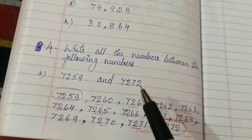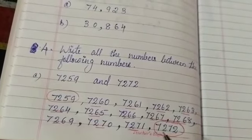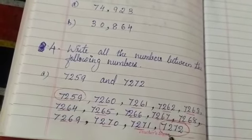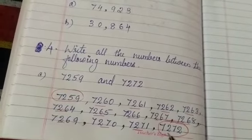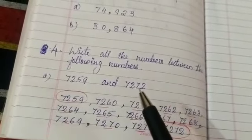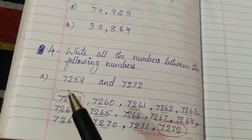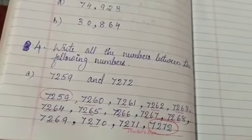7272. So, we find up to 7271. No need to find this number because already this number is given. So, which are the numbers between 7259 and 7272? These numbers. These are the numbers between these two numbers, clear?